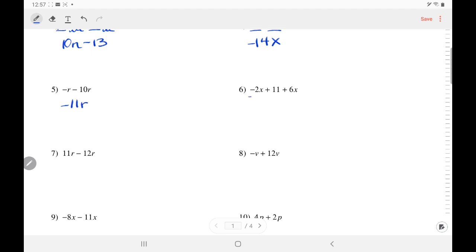Over here, negative 2x plus 6x. Use the rule, they're opposites. So, 6 minus 2 is 4x. Take the sign of the stronger number, 6, which is positive, plus 11.